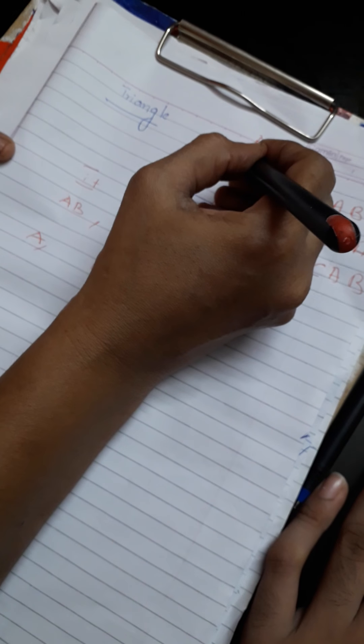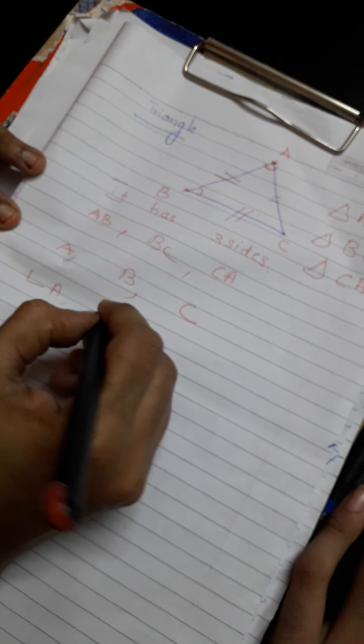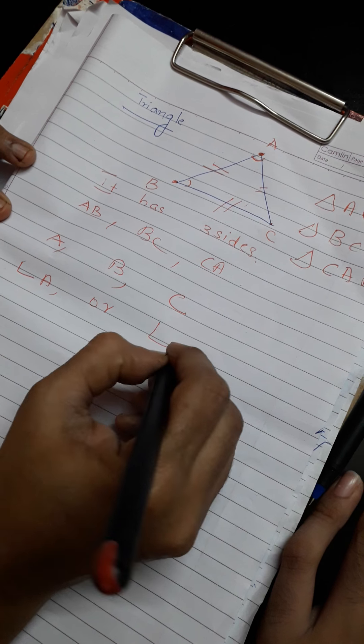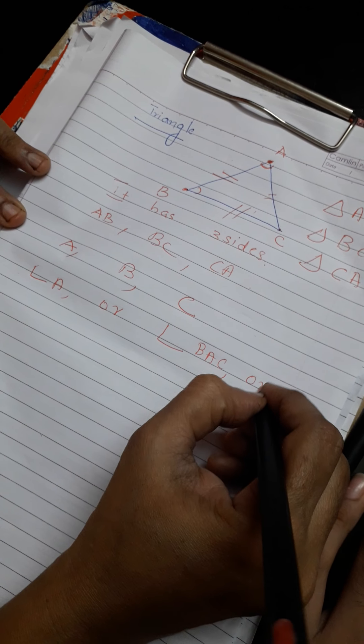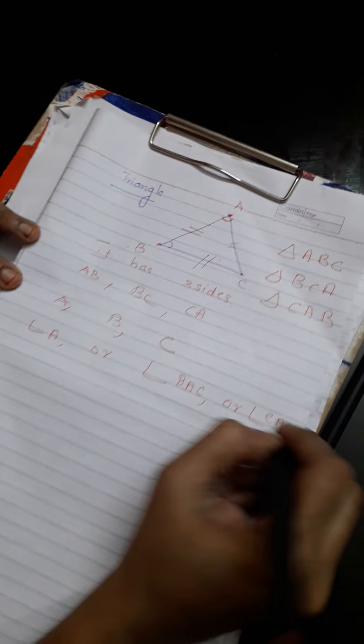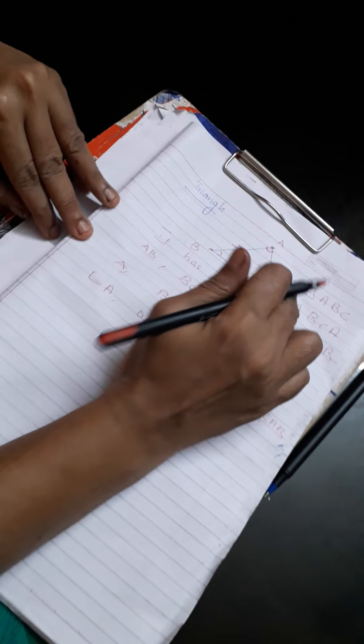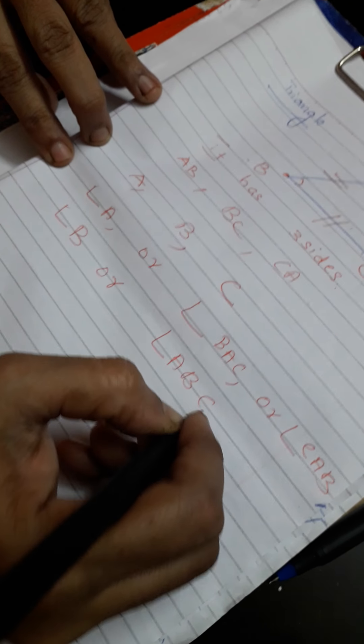Here we can say this angle as angle A, or we can say it as angle BAC or angle CAB. That is, A we call it in three ways. Then angle B we can call it as angle ABC or angle CBA.